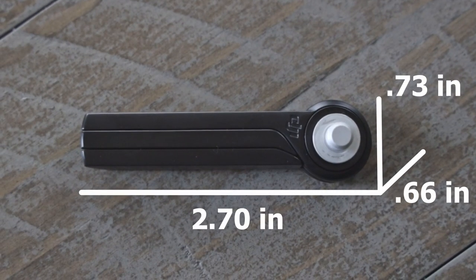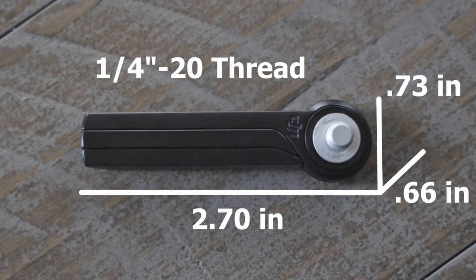The tripod is 2.7 inches long, 0.73 inches wide, and 0.66 inches at the biggest point.